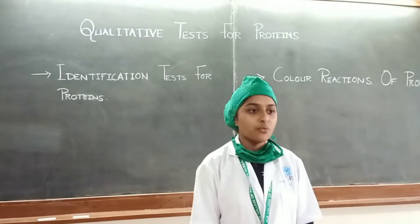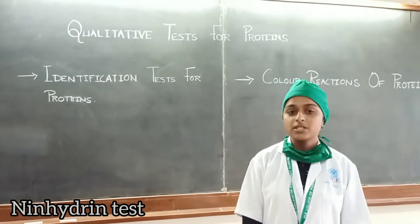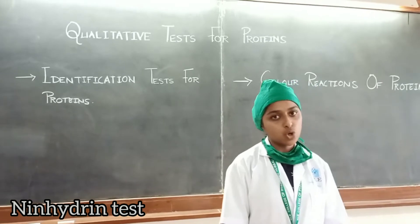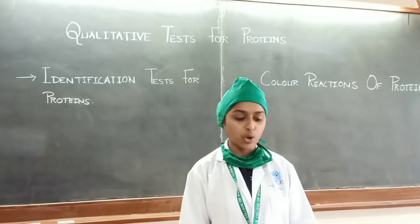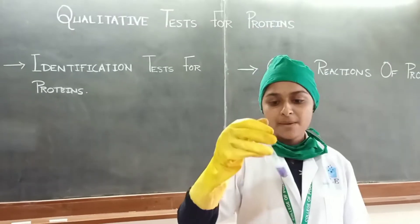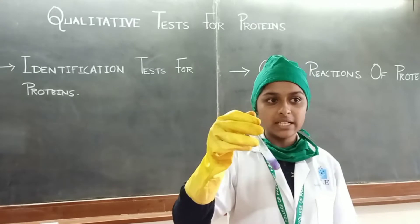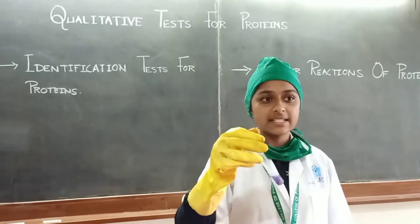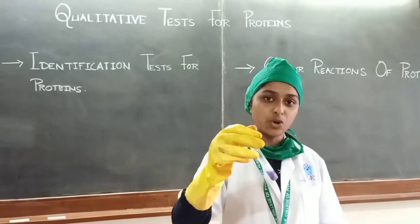Ninhydrin test: 1 ml of sample solution plus 2 drops of ninhydrin reagent, heated. By observing it, appearance of a purple color indicates the presence of amino acids and proteins.